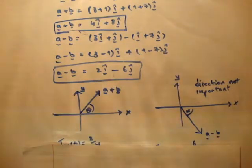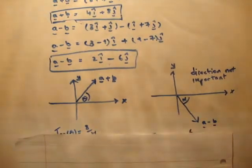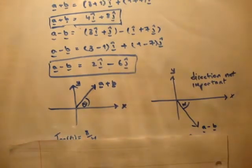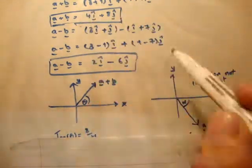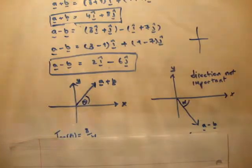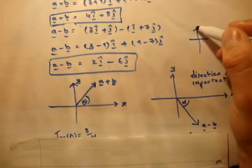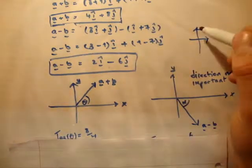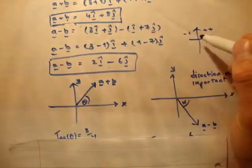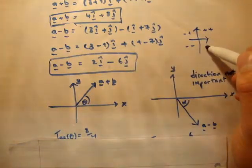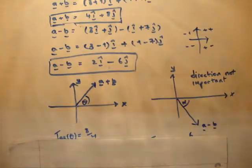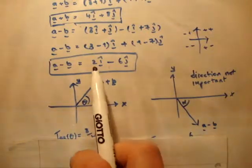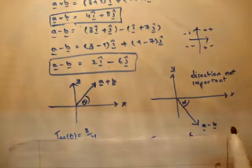Now we're going to sketch the vectors. This is vector a plus b, which is 4i hat plus 8j hat. That's plus plus, meaning it's in the first quadrant. As a quick recap, this quadrant is plus i plus j, this is minus i plus j, minus i minus j, and plus i minus j. We can see this plus plus goes into the first quadrant. The plus minus vector goes into the fourth quadrant.